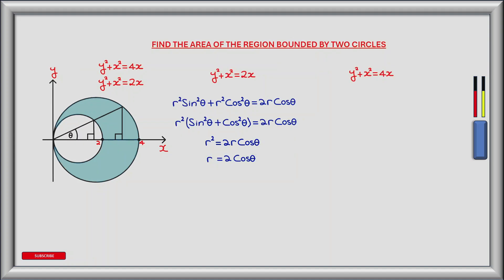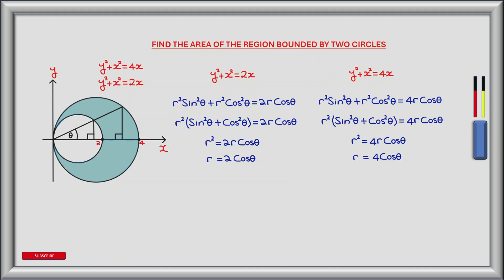Now let's convert our two circles to polar coordinates by substituting r cos theta for x and r sine theta for y. For the inner circle, substituting gives r squared sine squared theta plus r squared cos squared theta equals 2r cos theta. Factoring out r squared and applying the identity sine squared theta plus cos squared theta equals one, we get r squared equals 2r cos theta, and dividing by r gives r equals 2 cos theta. Similarly for the outer circle y squared plus x squared equals 4x, we get r equals 4 cos theta.